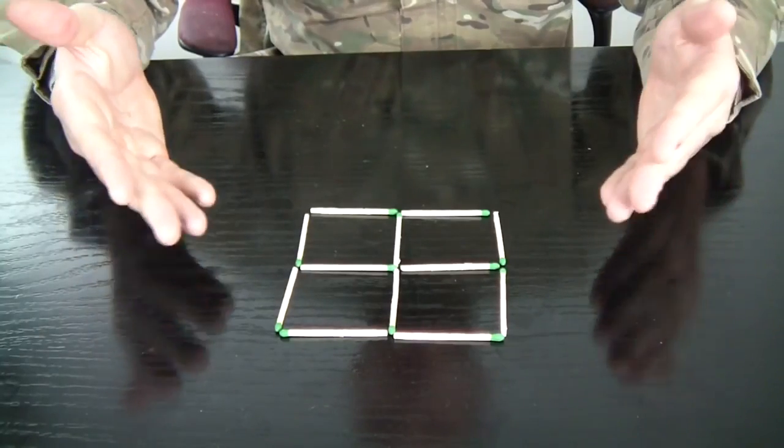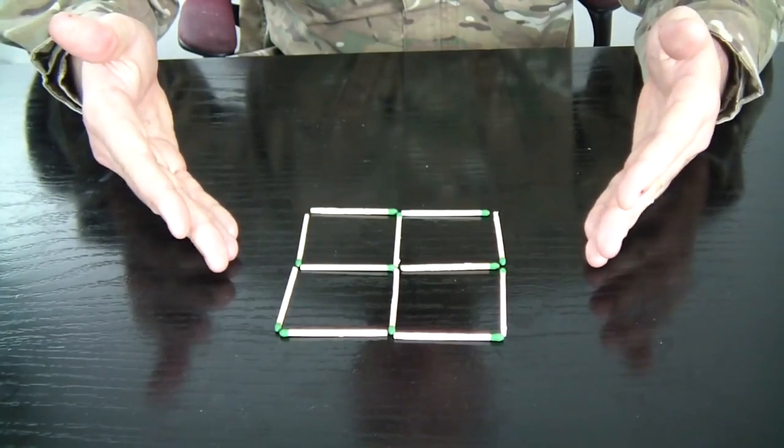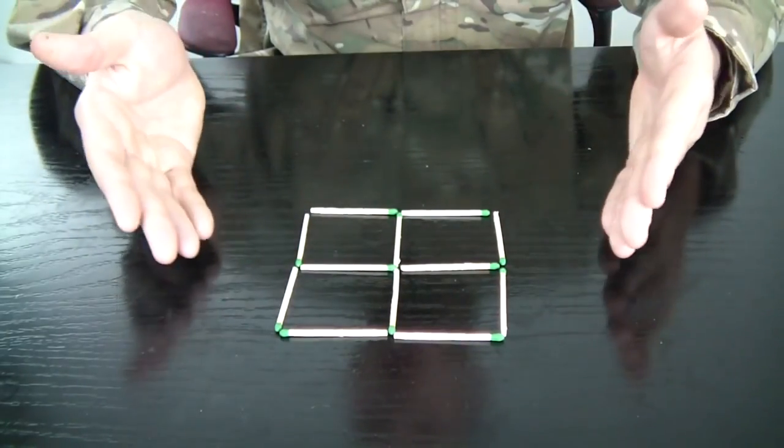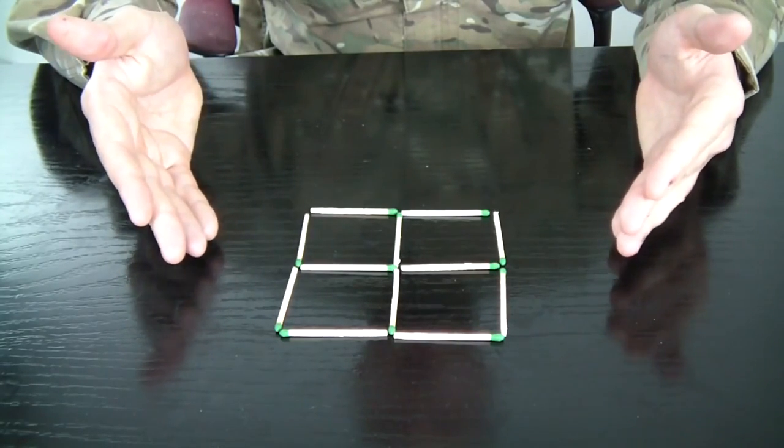And the challenge is move only three matches to make three small squares. Right now it's four squares. All you can move is three matches to make it three small squares.